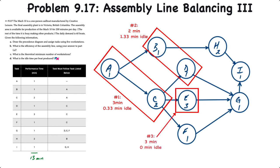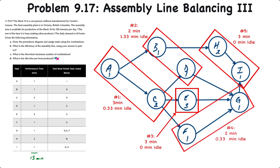Task E is three minutes and is as close to the cycle time as we can get without going over, so it'll be workstation three with a workstation time of three minutes. For the four remaining tasks F, G, H, and I, H and I are in close proximity — H precedes I — and together they give a three-minute workstation time, so we'll combine H and I into workstation five. That leaves F and G, each with a task time of one minute, combined into workstation four with a two-minute workstation time.